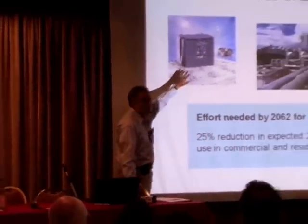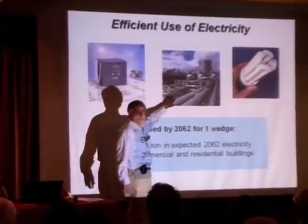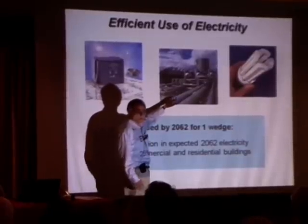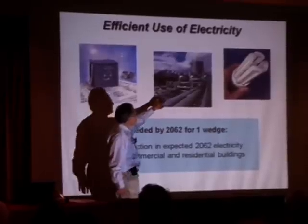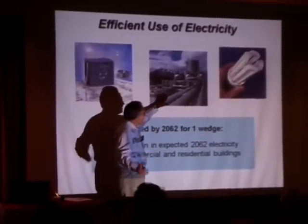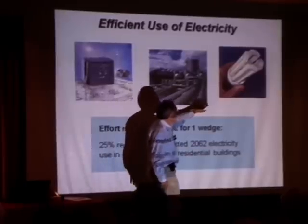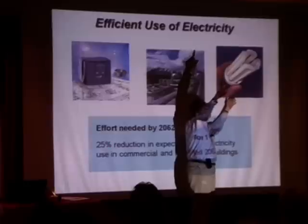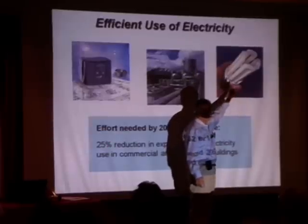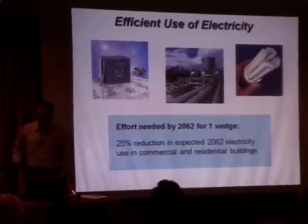For electricity, again three pictures: a motor controller using variable speed drive — an engineering solution; co-generation, where you deliberately put industrial heat use next to a power plant and use the otherwise waste heat to drive a paper company or food processing plant; and a light bulb. The fluorescent light is not so popular — we're forcing people to use them. We need a better light bulb that people actually want to use, and that's the behavior part.